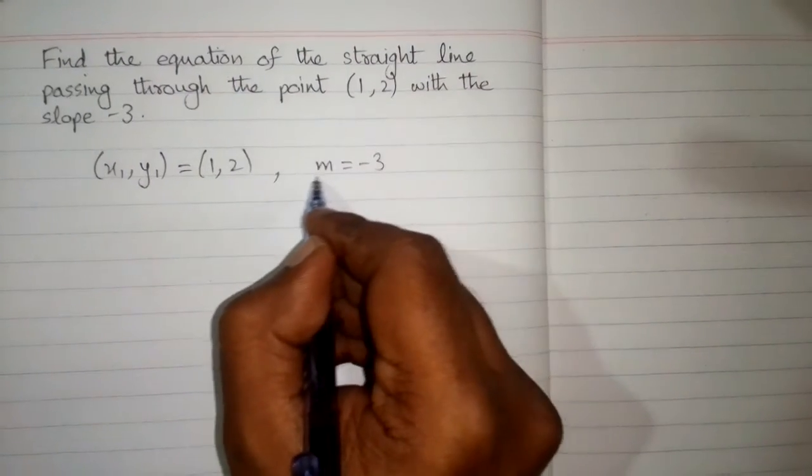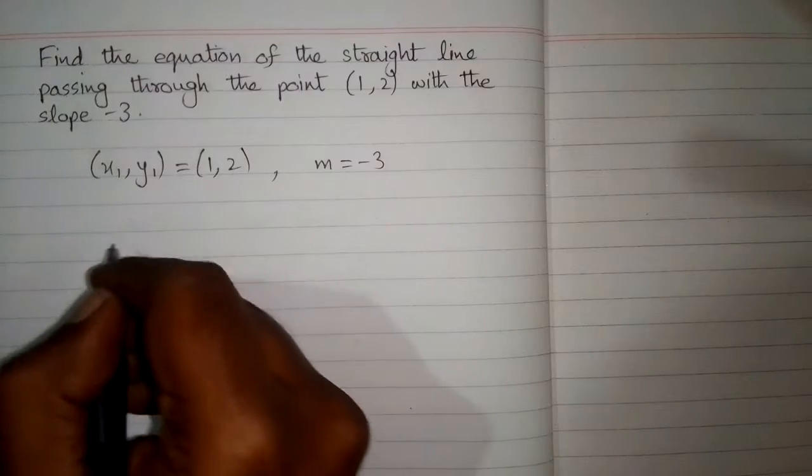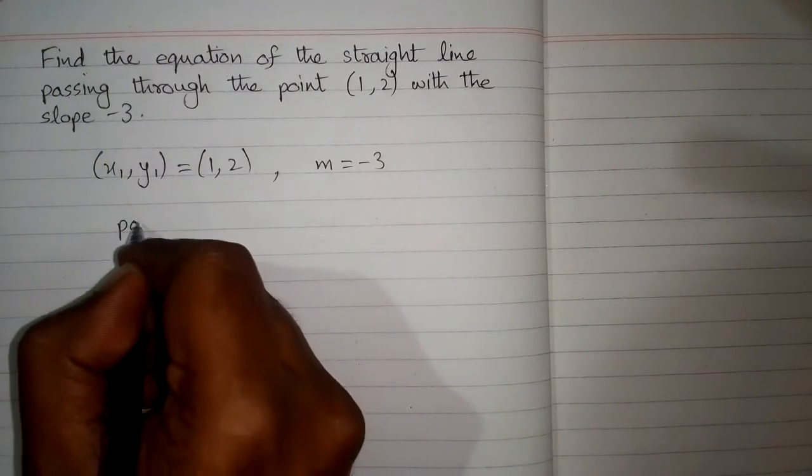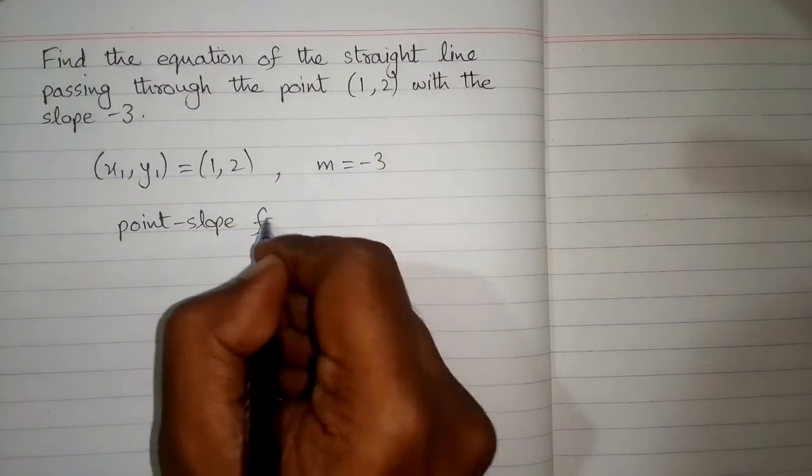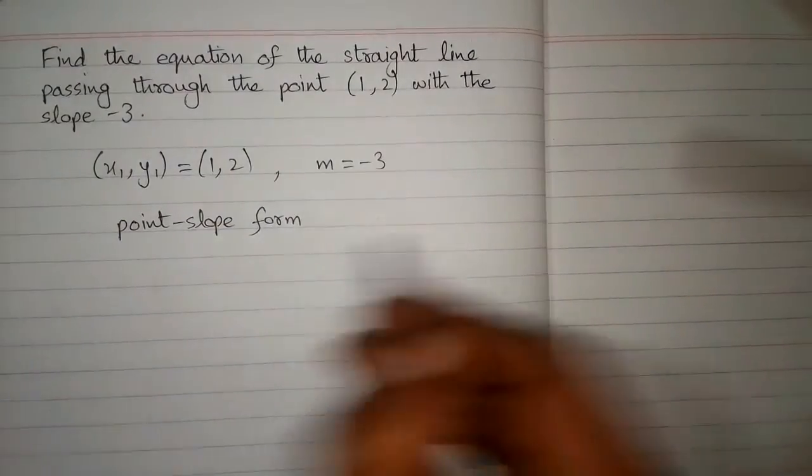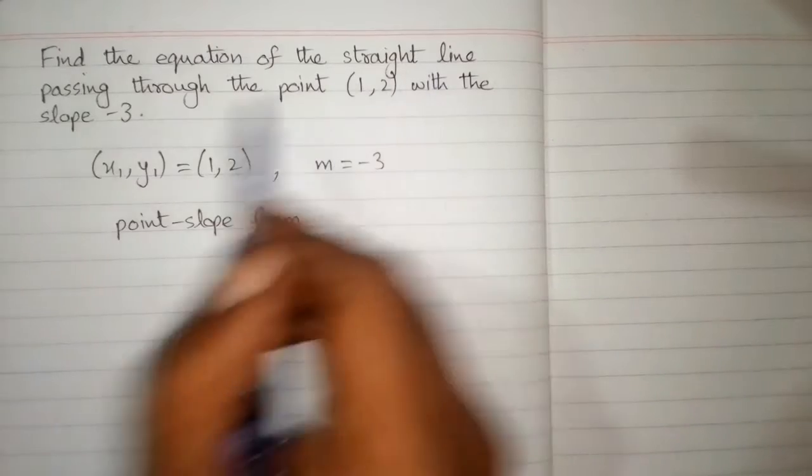The symbol for the slope of the line is m. So we will use point slope form to find the equation of the straight line.